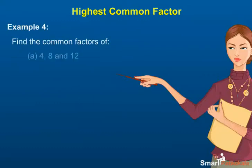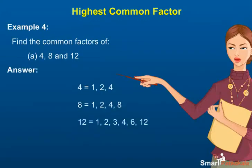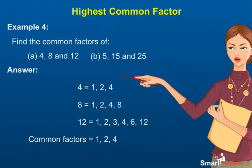Example 4. Find the common factors of: A: 4, 8 and 12. B: 5, 15 and 25. Answer. A: 4, 8 and 12. Factors of 4 is equal to 1, 2 and 4. Factors of 8 is equal to 1, 2, 4, 8.